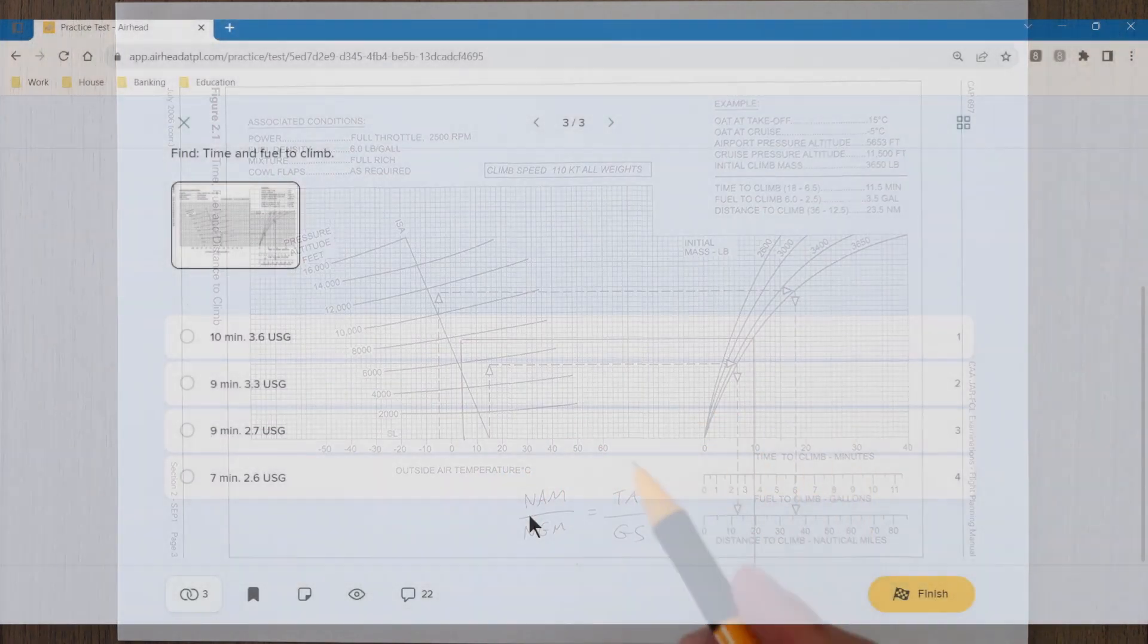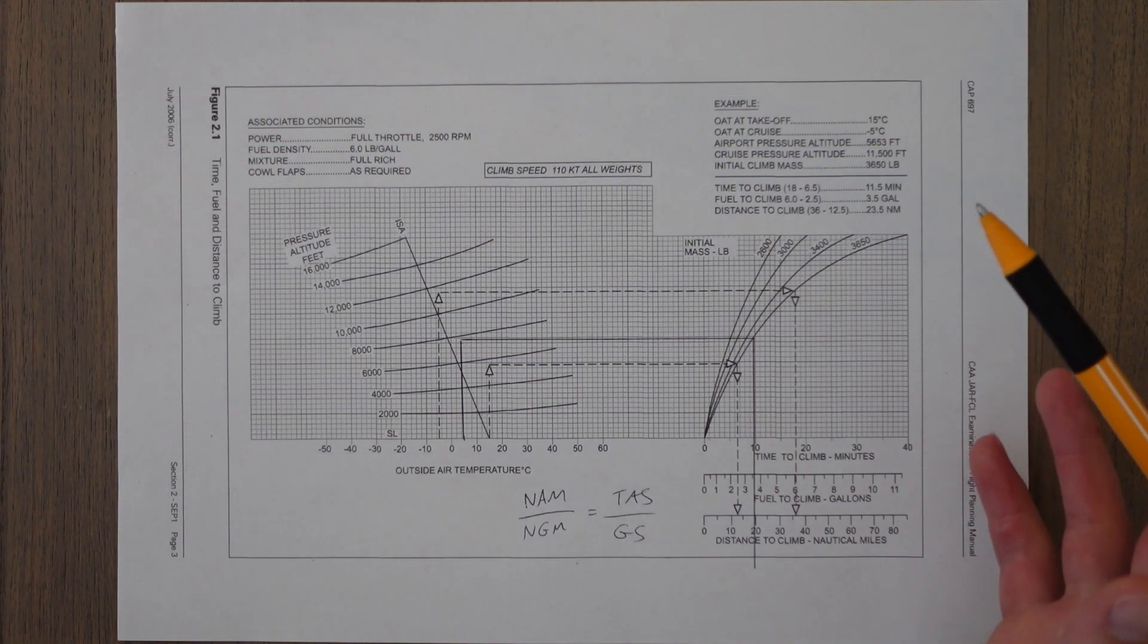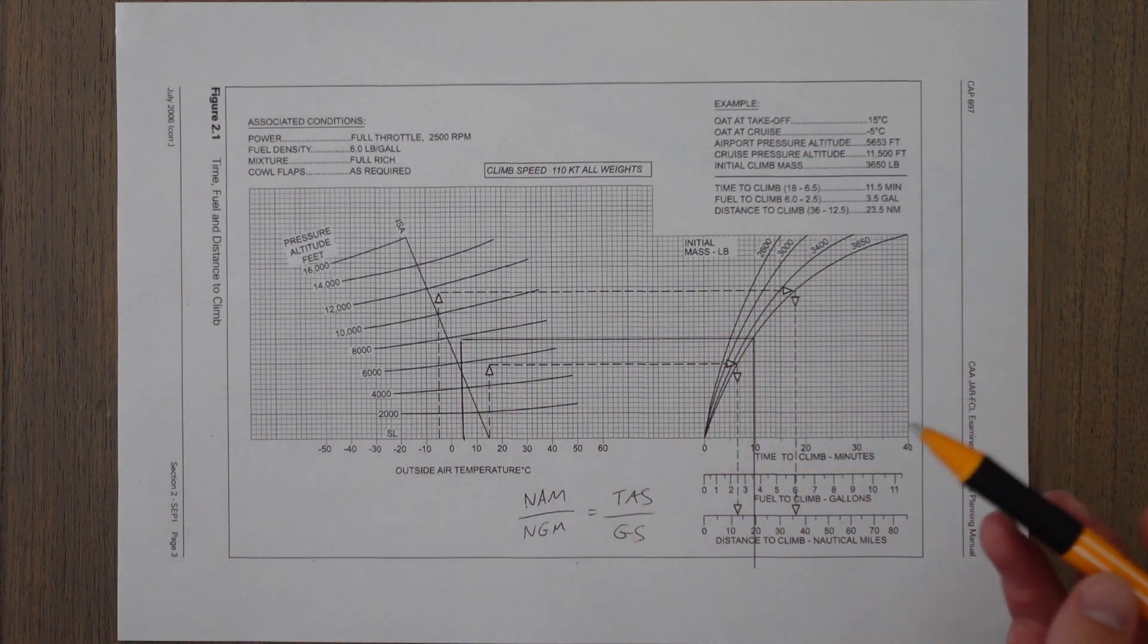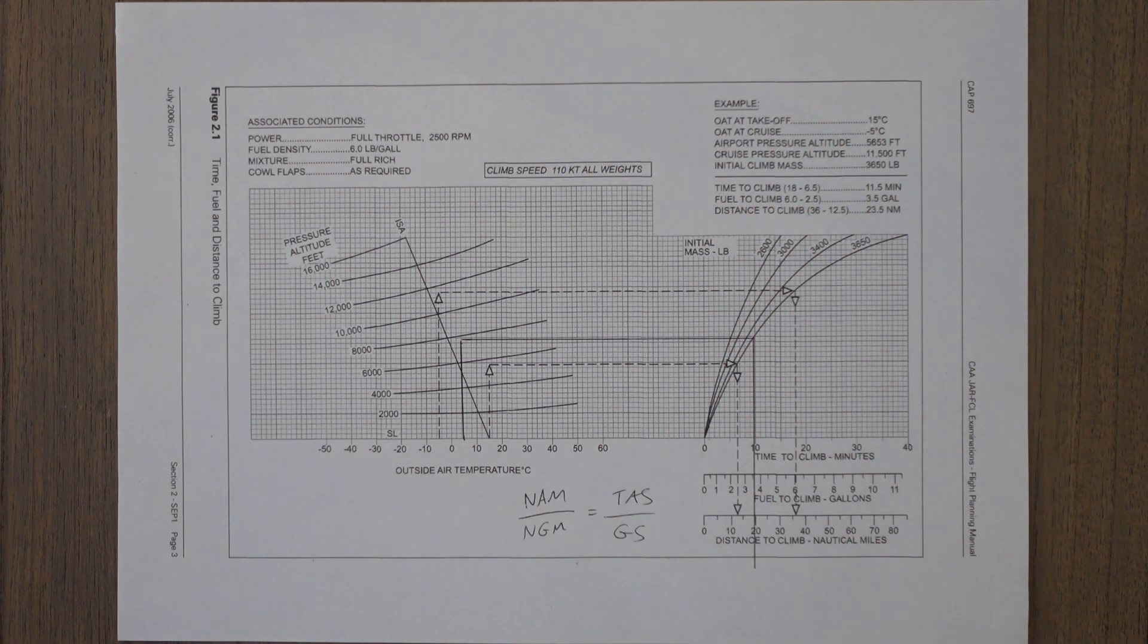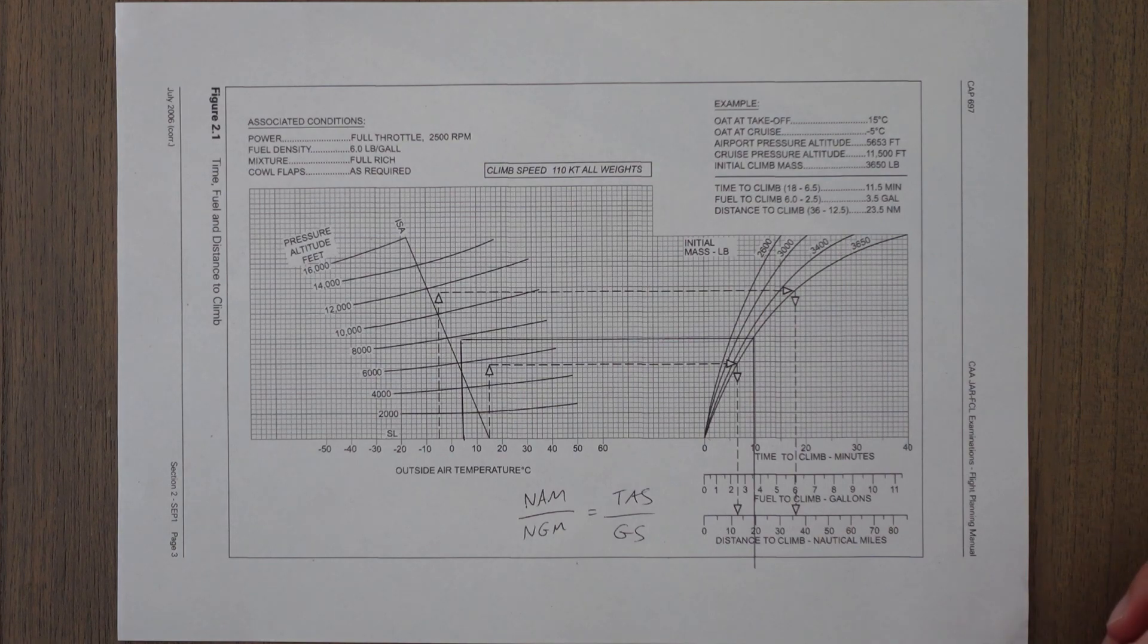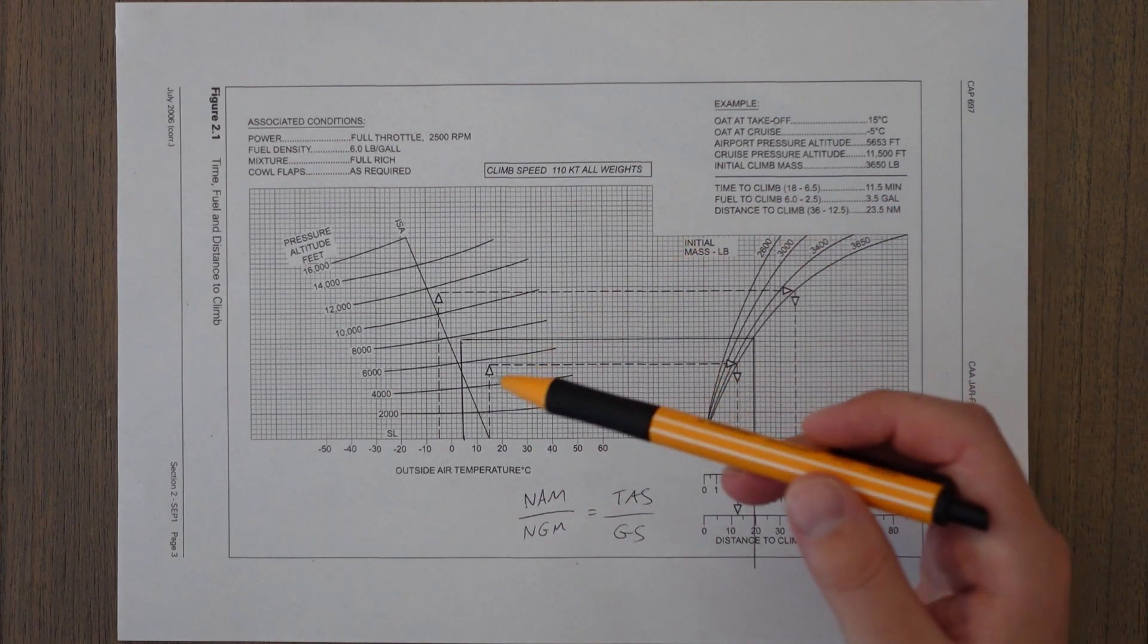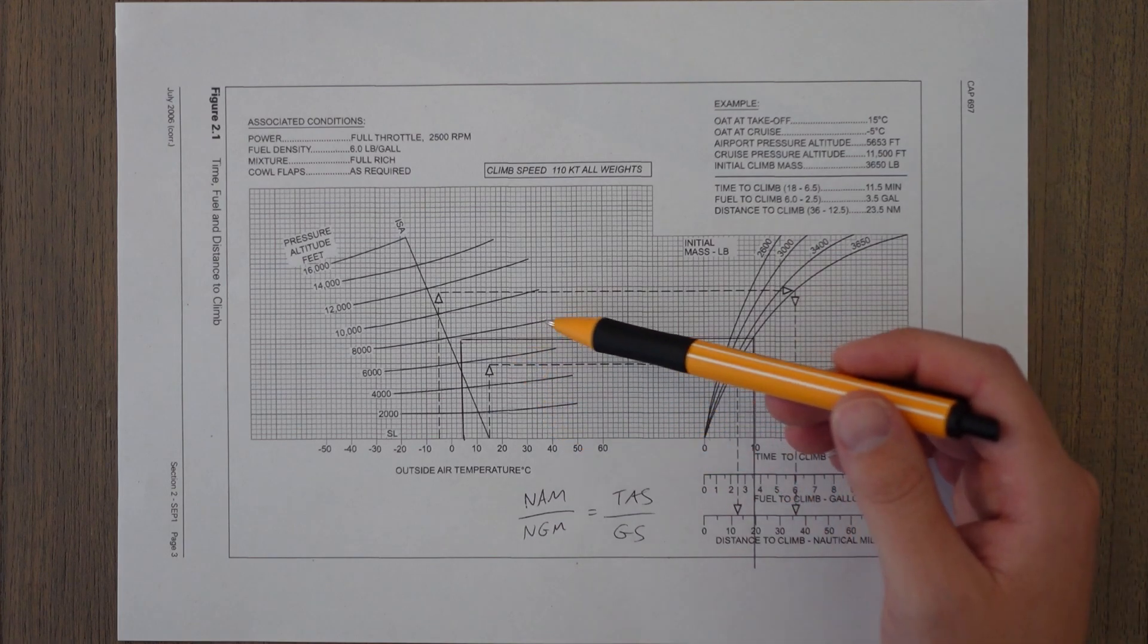Looking at the answers, I've clearly forgotten that we weren't even asked for the distance covered. But now you know how to do it. The most close answer we have is probably 9 minutes to climb and 3.3 gallons. This is information we could use in a journey log so we can accurately predict what fuel we expect to have left on board after our 9-minute climb to flight level 075. If we noticed at the top of climb our fuel was 5 US gallons down instead of 3.3, that might indicate a fuel leak or some other problem.